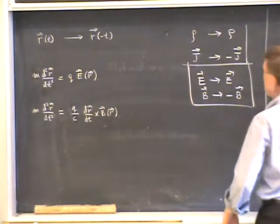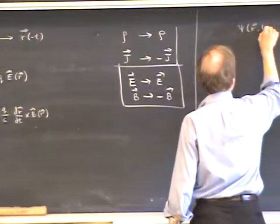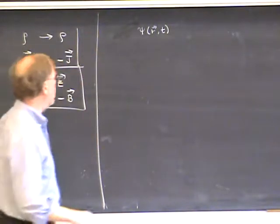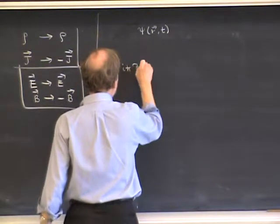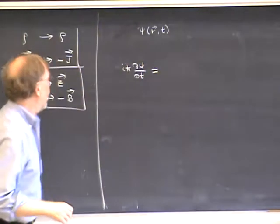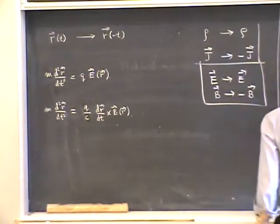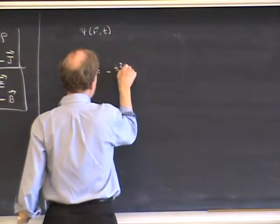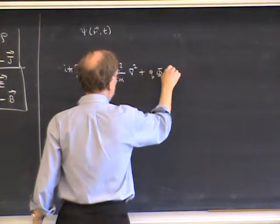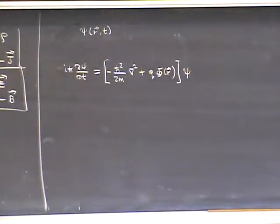Let's suppose we have a solution to the equations of motion—specifically, a spinless particle moving in three dimensions. We've got some time-dependent wave function, and we'll suppose that it's a solution to the time-dependent Schrödinger equation: iħ ∂/∂t ψ equals the Hamiltonian times ψ. Let's take an electric field. The Schrödinger equation is then −ħ²/2m ∇² plus Q times the scalar potential φ(r), multiplied on ψ. This is the Schrödinger equation for a particle in an electrostatic field.